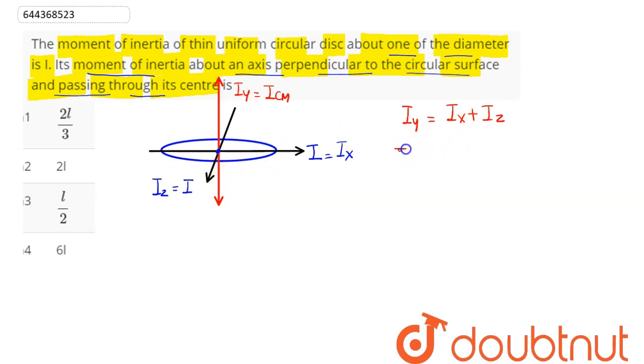Hence Iy is equal to ICM which is being asked, and Ix and Iz here is I plus I, hence this comes as 2I. 2I means option number 2 is the correct answer. So we can say 2 is our answer.